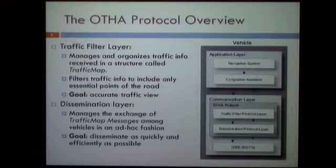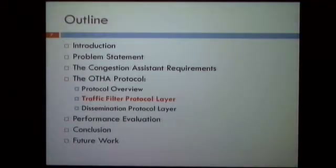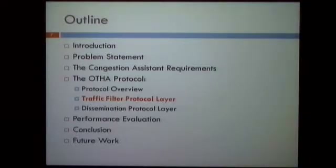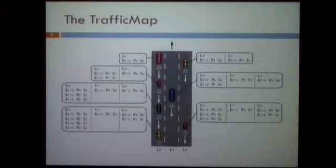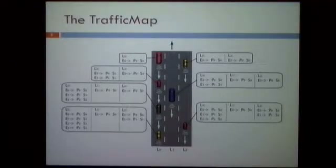I will now describe the main functions of each layer, starting with the upper traffic filter protocol layer. The general idea of the traffic map is that when a vehicle at the front of a cluster is the first on the road ahead, it will start building the traffic map by inserting its own position and speed value. By exchanging information with vehicles behind, each vehicle adds its own information such that the last vehicle has a complete overview of traffic across all lanes of the road.